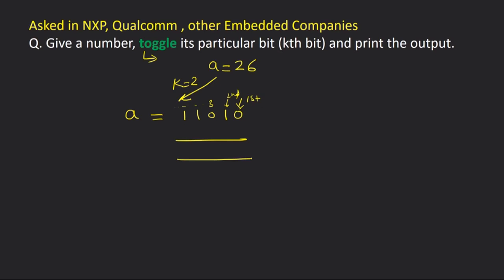If k = 2, that is the second bit — this is our second bit — we want to toggle it. Toggle means if a particular bit is 1 and we flip it, it should become 0. If a bit is 0, after toggling it should be 1. So toggling means flipping a bit.